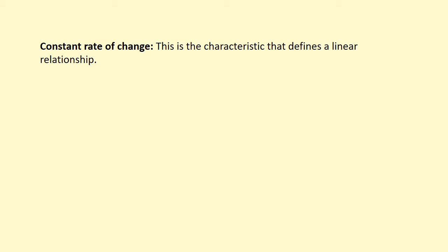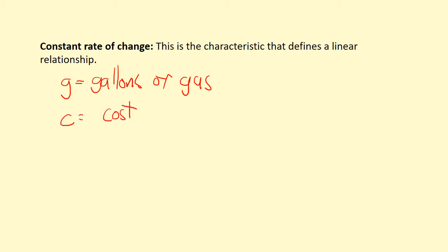Let me give you an example of a constant rate of change between two variables. We have one variable g, which is gallons of gas, and C, which is the cost of the total amount of gas that you buy.